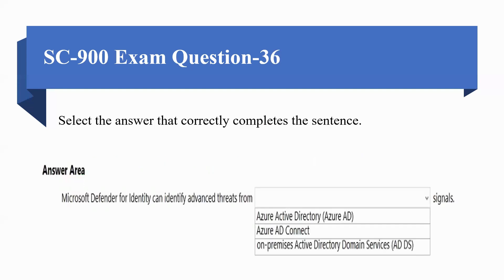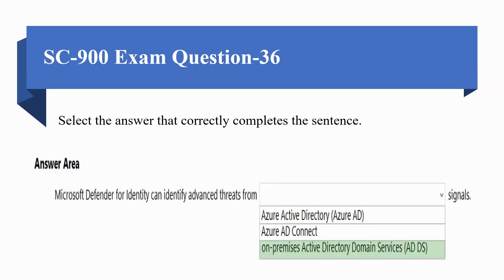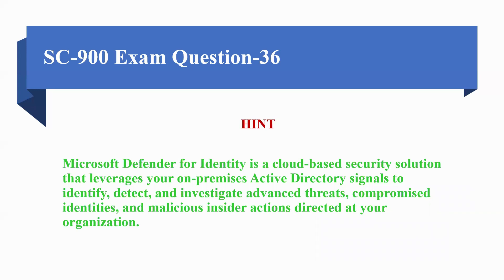Next question: select the answer that correctly completes the sentence. Microsoft Defender for Identity can identify advanced threats from which signals? Options include Azure AD, Azure AD Connect, and on-premises Active Directory Domain Services. The correct option is on-premises Active Directory Domain Services, because Microsoft Defender for Identity is a cloud-based security solution that leverages on-premises Active Directory signals to identify, detect, and investigate advanced threats, compromised identities, and malicious insider actions directed at your organization.